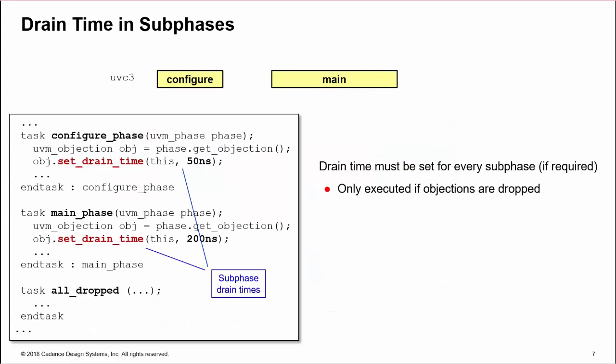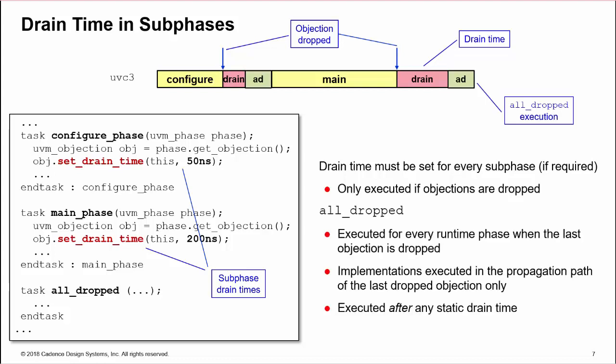Static drain times must be set if required by calling set_drain_time in a runtime sub-phase task. The drain time will be executed when the objections are dropped. All_dropped tasks are executed for every runtime sub-phase, but only in the propagation path of the last dropped objection. All_dropped is executed after the static drain time. At the end of the dynamic drain time, if no further objections are raised, the run phase ends.